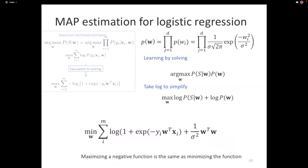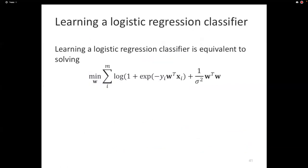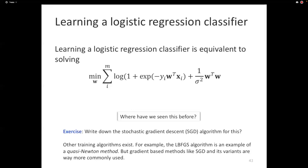Dropping constants and flipping to minimization, the MAP objective becomes: minimize the logistic loss plus (1/σ²) · w^T w. This looks familiar — it's a regularizer. What started as a prior in the Bayesian framework has become a regularizer from the loss minimization perspective. Just as with least squares, we have a loss function (logistic loss) plus a regularizer — and the regularizer imposes a preference for weights drawn from a normal distribution, equivalent to L2 regularization as in SVM.